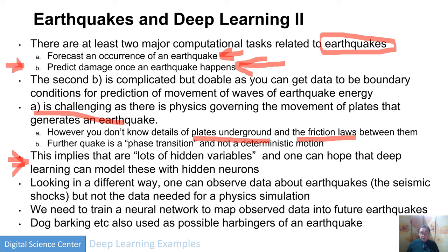We can observe data about earthquakes — namely the shocks, water gurgling out before an earthquake, or other precursor signals — but we don't have the physics needed to specify boundary conditions for a real simulation. So we're trying to map observed data into a future forecast. My colleague John Rundler at UC Davis calls this 'pattern informatics,' and it underlies a lot of deep learning: you want to learn patterns and their consequences, and when you come to a new scenario, you just feed in that pattern.